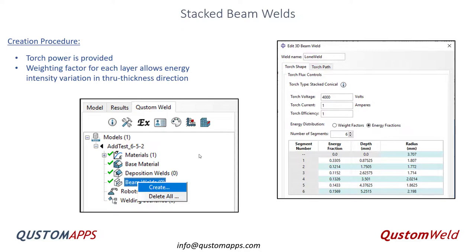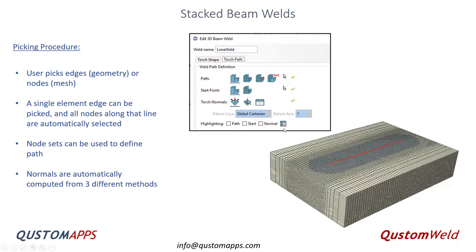The creation procedure is: we go into Custom Weld, go to beam weld, say create, and we have to enter two things — the shape and energy of the torch, and then the torch path. For the torch shape we have energy functions and weighting factors. With energy fractions we could say the first layer gets 33 percent of the energy, the next layer 12 percent, and so on. Weighting factors define the maximum intensity — we can put ratios to give a maximum intensity. So if layer one is set to 1.2 and all other layers are 1, that's a 20 percent higher intensity than the other layers. That's a measure of maximum flux intensity, which is at the center of the torch. For picking the path, we typically pick a single path on the surface.